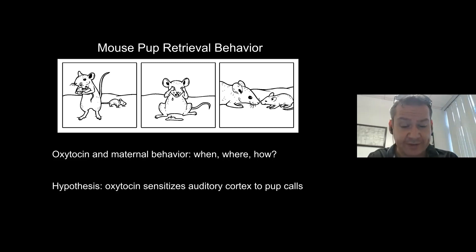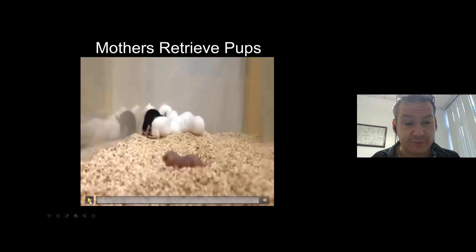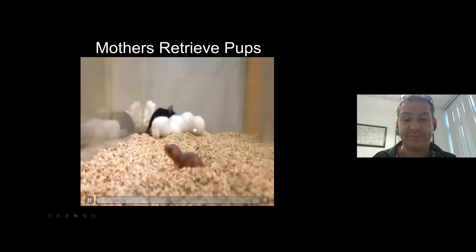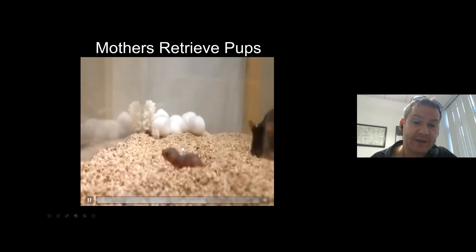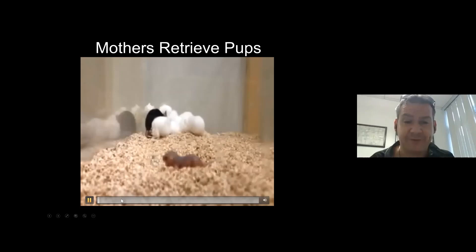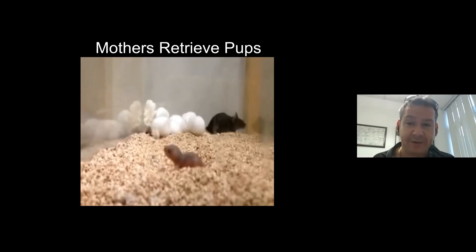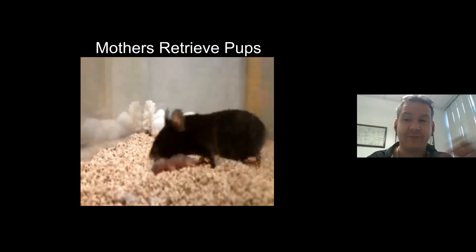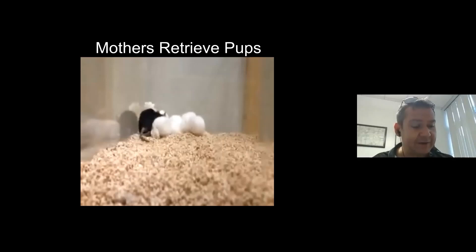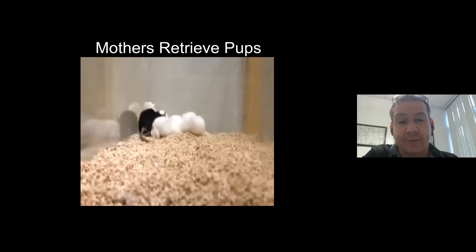We can study this in the lab. Here's a movie where we've pulled a pup out of the nest. The mother goes and picks up the pup with short latency. What I'd like you to focus on is how the mother seems to understand the physics of the pup — precisely where to pick it up, how much force to use, overcome gravity without hurting the animal, picking it up from the scruff of the neck. It's unlikely that all of this is fully innate and hardwired. There have to be motor components that animals have learned.